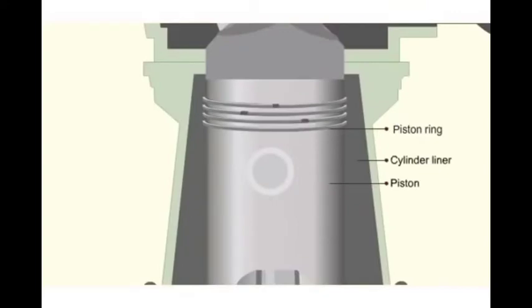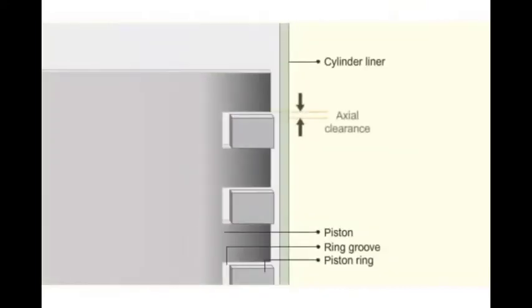Axial clearance is the clearance from the top of the ring to the top of the ring groove. The combustion gases exert pressure behind the piston rings and push towards the liner for proper sealing. If the clearance is less than the minimum limit, combustion gases cannot flow behind the rings.